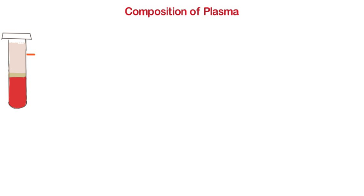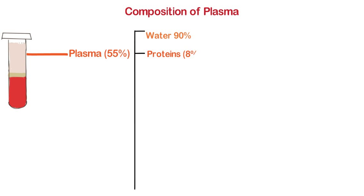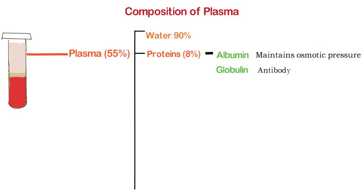The fluidity of blood is due to the presence of plasma. About 90% of plasma is water, and important proteins occupy only 8% of it. These are albumin, which maintains osmotic pressure; globulin, which gives rise to antibodies and helps develop our immune system; and fibrinogen, which helps in clotting of blood. Note that hemoglobin is not a plasma protein.